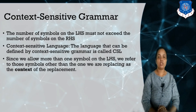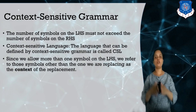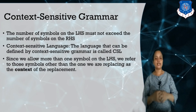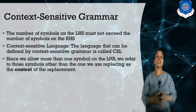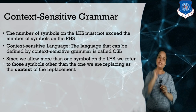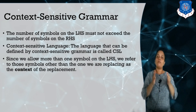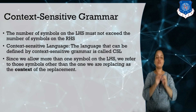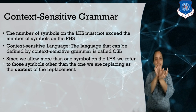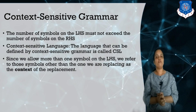The language generated by context free grammar is known as context free language. For context sensitive grammar, restrictions are placed on the length of the left hand side and right hand side. The number of symbols on the left hand side must not exceed the number of symbols on the right hand side. In context free grammar only a single non-terminal is allowed on the left, but in context sensitive grammar more than one symbol is allowed on the left hand side.